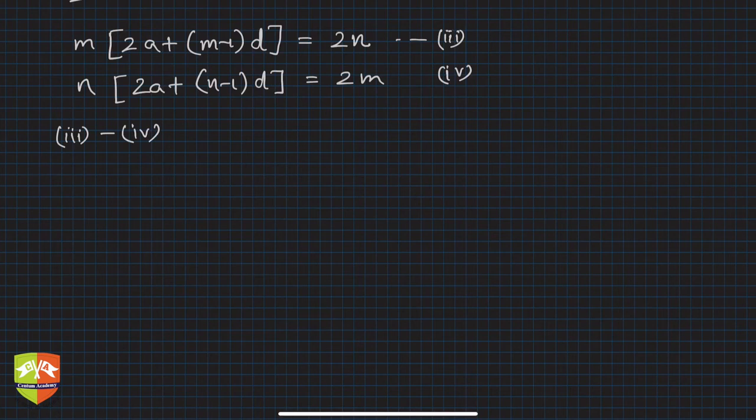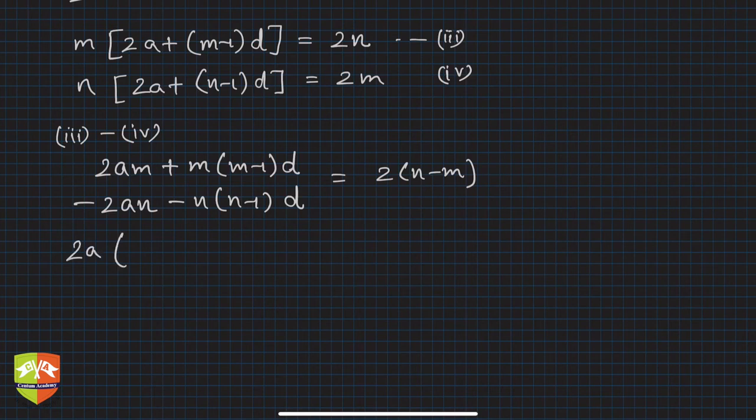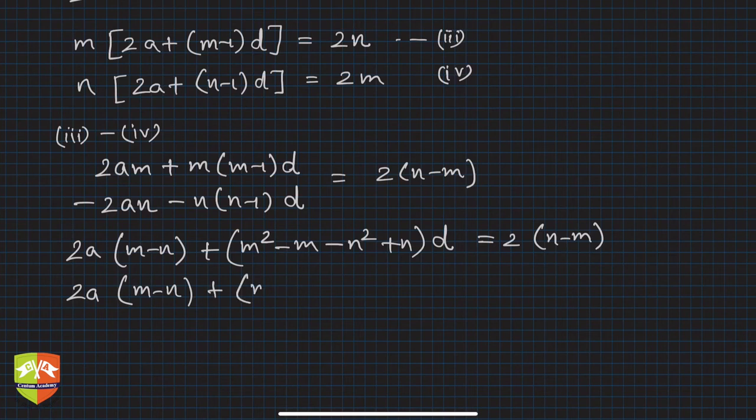Now let's subtract equations 3 and 4. So 3 minus 4 will give me what? Let's open the brackets and do the calculation. So the first term will be 2am plus m times m minus 1 times d, and here minus 2an minus n times n minus 1 times d, and here you'll get 2n minus m. So if you take 2a common here, 2a you'll get m minus n. And from here let's open this again, so it is m squared minus m, m minus n squared plus n times d. This is 2n minus m.